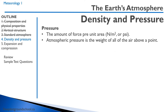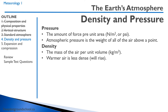Pressure is the amount of force per unit area — for example, newtons per meter squared, which is called a Pascal, or pounds per square inch. The atmospheric pressure is the weight of all of the air above a point. So if we're flying at 10,000 feet, we'd measure the pressure of a column of air — say a one square inch column — above that point. Density, on the other hand, is the mass of the air per unit volume, such as kilograms per cubic meter.